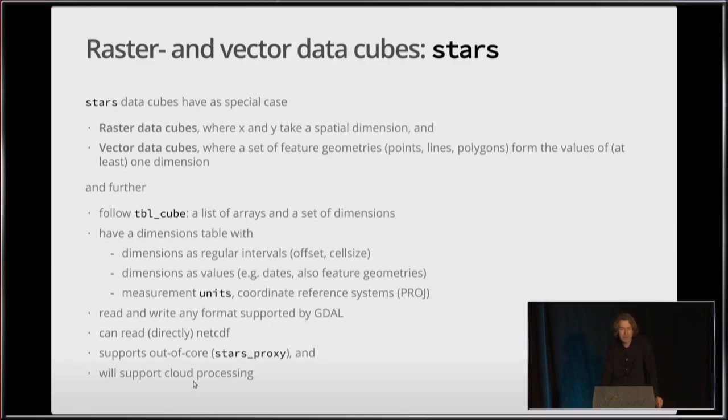So what we do in the STARS package in the STARS project is to implement raster and vector data cubes. And those are MD cubes where one or more of the dimensions relate to space and typically also to time. So raster data cubes typically have X and Y, spatial dimensions. And vector cubes have a single dimension that lists the points, lines, polygons that the index refers to. And then we basically have a list of arrays and sets of dimensions, have regular dimensions. Dimensions as values and take care of measurement units and coordinate reference systems. Do the IO with GDAL, which we already did with SF. Also do a lot of work with NetCDF, which Michael Sumner is very instrumental in that side. And we support out of core and we will support cloud processing.